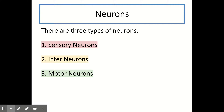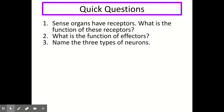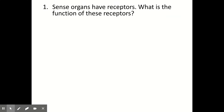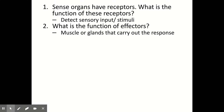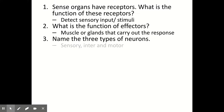Before we move on to more detail about the types of neurons, let's try some quick questions. The function of receptors in sense organs is to detect sensory stimuli or inputs. The function of effectors — muscles or glands — is to carry out the response. The three types of neurons, in order, are sensory, inter, and motor.